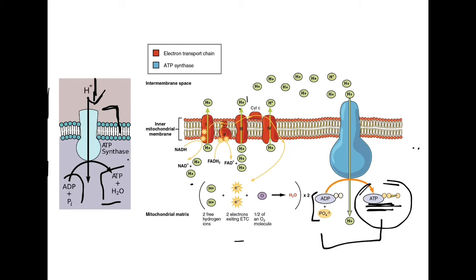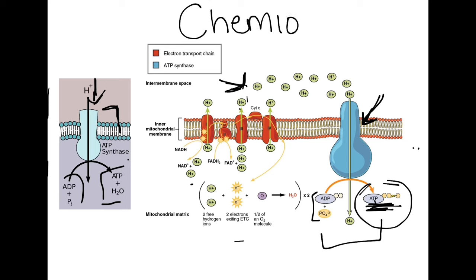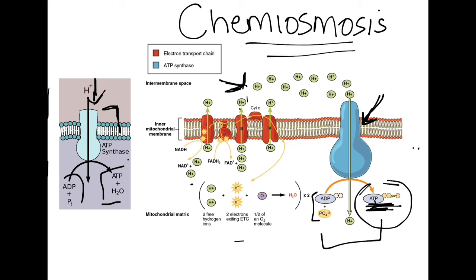Using the hydrogens and the principles of oxidative phosphorylation drives ATP synthase to make ATP. This is the principle of chemiosmosis — using chemical hydrogens and concentration gradients to drive ATP production through oxidative phosphorylation.